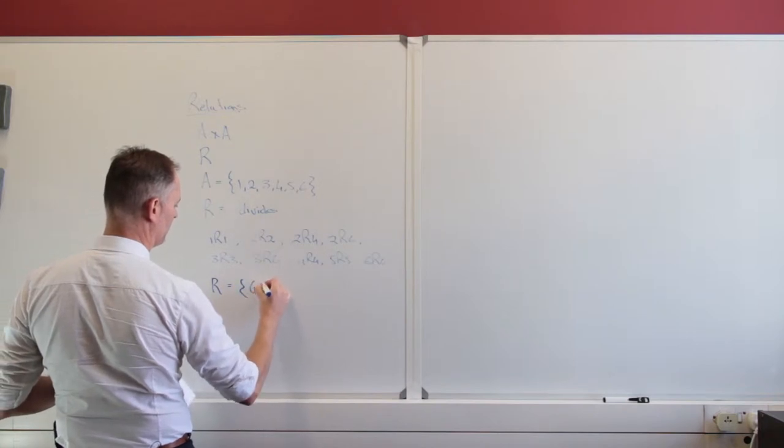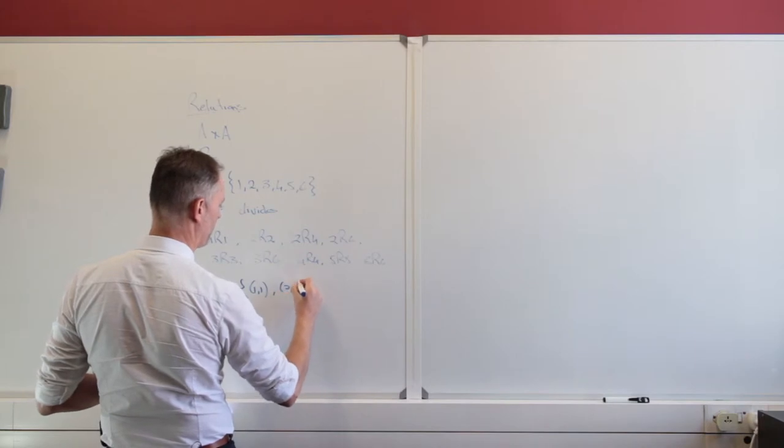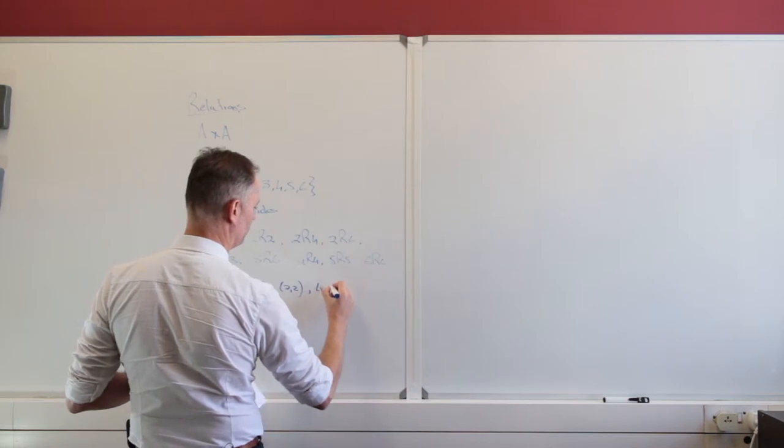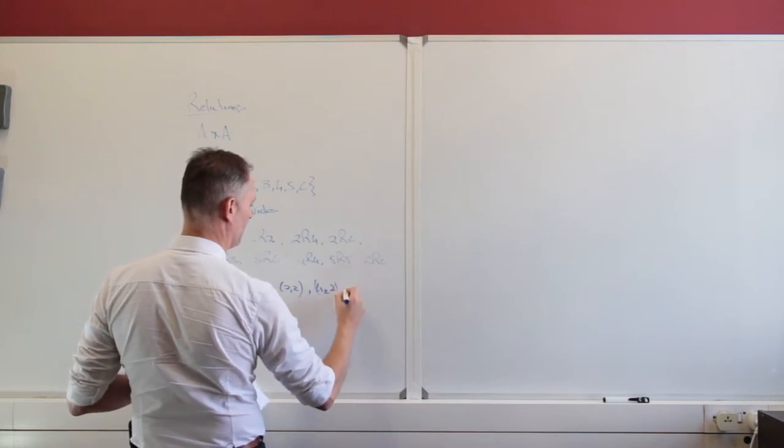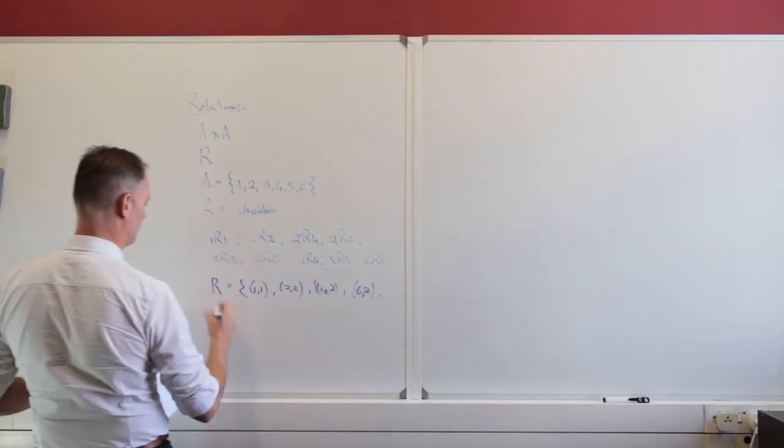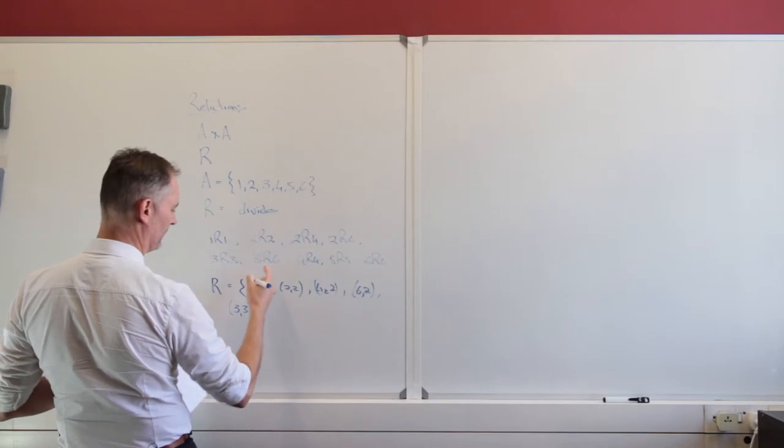It is going to be (1,1), and then (2,2), and then (4,2). And it is going to have (6,2), and it is going to have (3,3), and it is going to have (6,3).